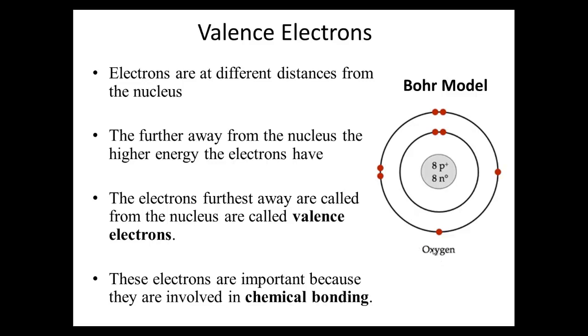The main point here is that electrons are at different distances from the nucleus. The further away the electrons are from the nucleus, the higher energy those electrons have. And the electrons that are in the furthest region from the nucleus are called the valence electrons. So, if you look at this example of oxygen, there's two, four, five, six that are in this final ring. And those are the valence electrons here. These two in the middle, they're called your core electrons. They're not part of that valence electron. And the valence electrons are actually really important because they are involved in all your chemical bonding.